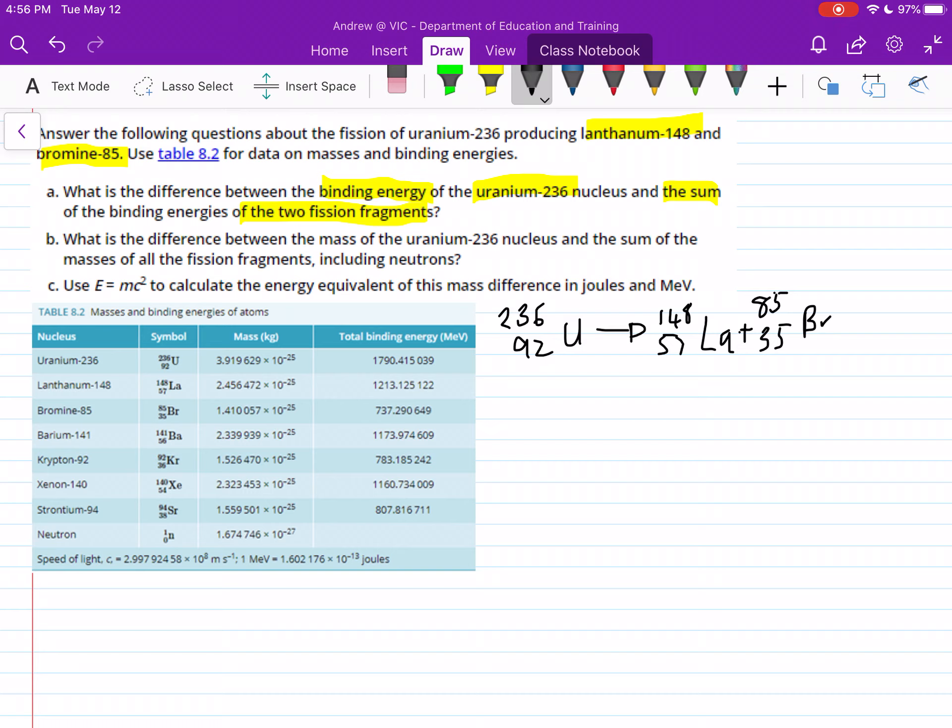Hopefully you notice here that our mass numbers aren't equaling up. 148 plus 85 doesn't equal 236. So we need to think about how many more neutrons we need to make this equal 236. You'll notice that your atomic numbers, these add up. 57 plus 35 does equal 92, but our top ones, they aren't equaling.